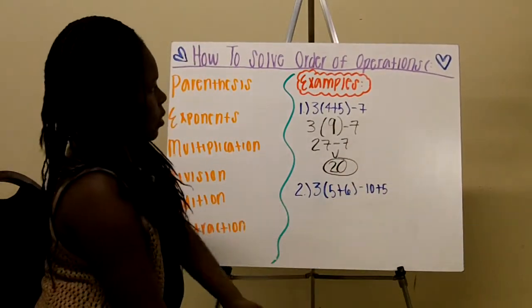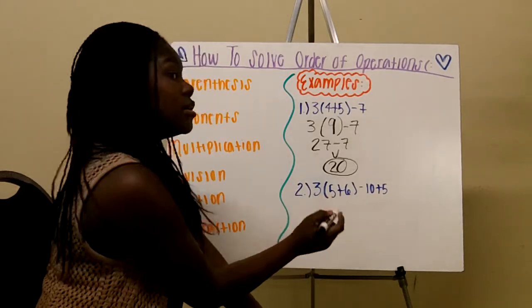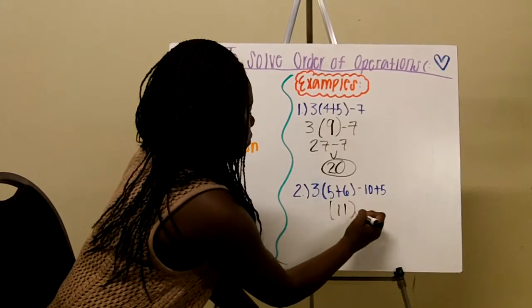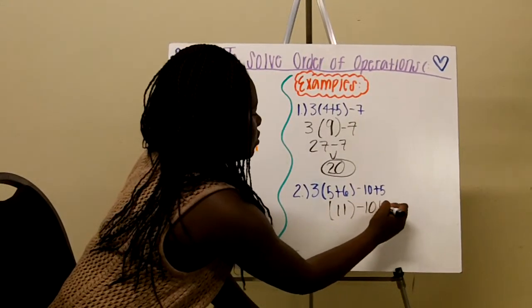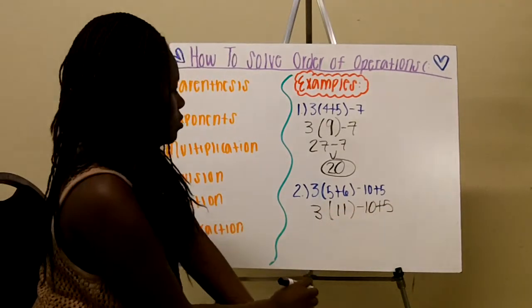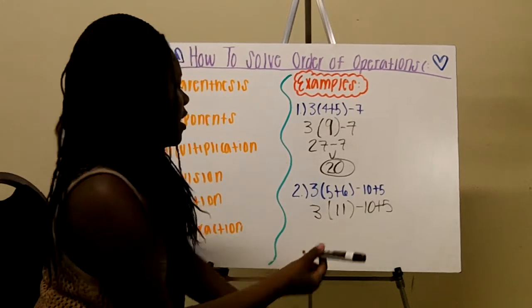So the second example is, we'll start off with a parenthesis, so 5 plus 6 equals 11, bring down your other numbers, and then 3 times 11 minus 10 plus 5.